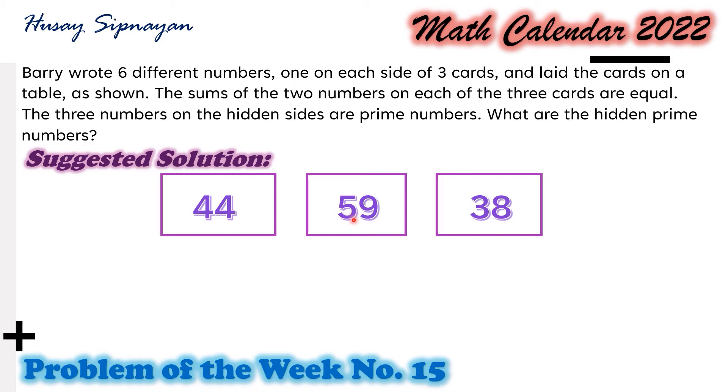However, the only way to obtain this even number would be to add another even number to 44 and a different one to 38. Since there is only one even prime number and that is 2, the middle card's hidden number cannot be an odd prime and so it must be even.